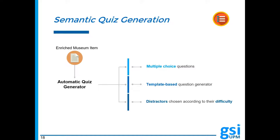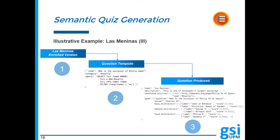Then, the query is executed to retrieve, first, the correct answer to the question, and second, a list of randomly selected, plausible yet incorrect alternatives from a set of elements similar to the answer. These alternatives can be sorted into three different lists according to their difficulty: easy, medium, or hard. The difficulty score is computed through entity similarity tools. Step 2 shows the structure of a question template, and step 3 shows the extract of an output object that contains the enriched museum item together with a list of questions, their answers, and different alternatives.